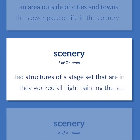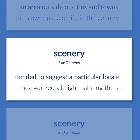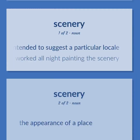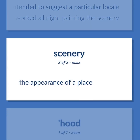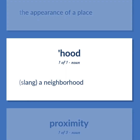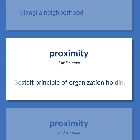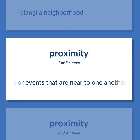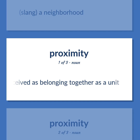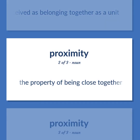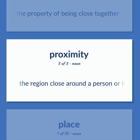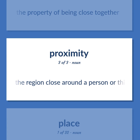Scenery: the painted structures of a stage set that are intended to suggest a particular locale — they worked all night painting the scenery. The appearance of a place. Hood (slang): a neighborhood. Proximity: a gestalt principle of organization holding that, other things being equal, objects or events that are near to one another in space or time are perceived as belonging together as a unit. The property of being close together. The region close around a person or thing.